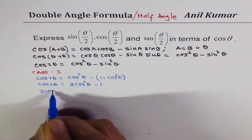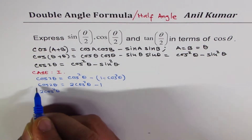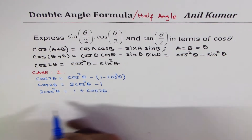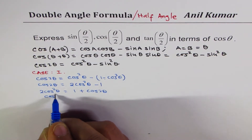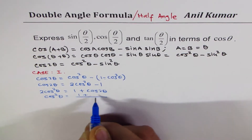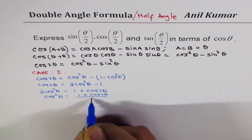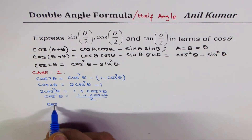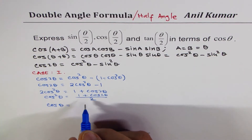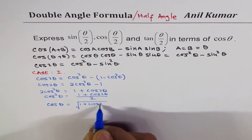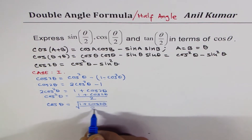So cos 2θ = 2cos²θ − 1. Rearranging, we get 2cos²θ = 1 + cos 2θ, which gives cos²θ = (1 + cos 2θ)/2. Taking the square root, cos θ = √((1 + cos 2θ)/2).